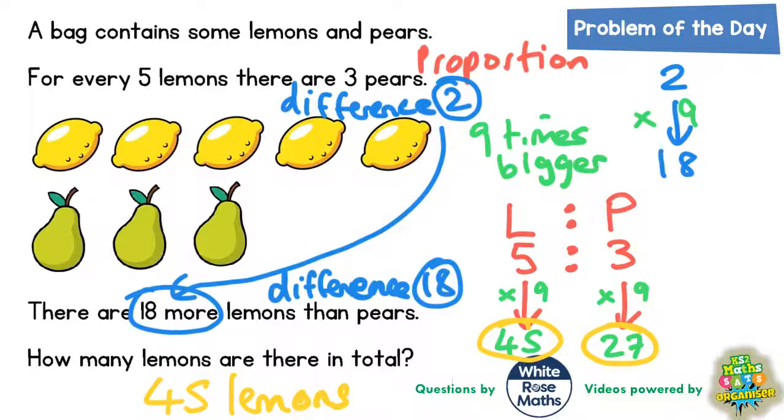What would be wise to do would be to double check that 45 is 18 more than 27. We can do that with a quick column method. If we do 27 add the 18 more that we were told about, 7 plus 8 is 15, put the 5 and carry the 1, and 2 plus 1 plus 1 is 4.